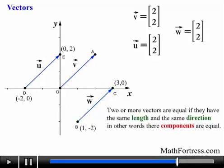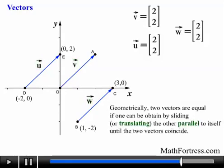Once again, we define two or more vectors to be equal if they have the same length and the same direction. In other words, their components are equal. Even though vectors u, v, and w have different initial and terminal points, they represent the same displacement. Geometrically, two vectors are equal if one can be obtained by sliding or translating the other parallel to itself until the two vectors coincide. So doing that, we see that they actually coincide.